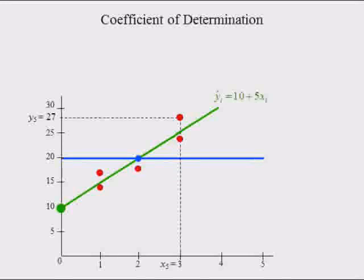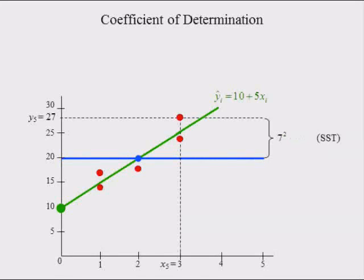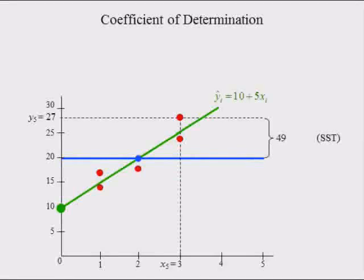The fifth observed value of x was equal to 3 and the fifth observed value of y is equal to 27. The difference between the fifth observed value of y and y's mean is equal to 27 minus 20, which equals 7. Since SST equals the sum of squared deviations between the observed value of y and its mean, the fifth deviation from y's mean, 7, has to be squared, which equals 49. SST is found by computing the remaining four squared deviations and then summing all five.